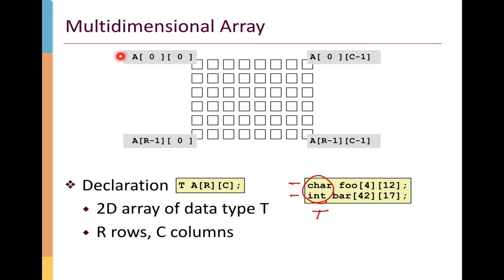Looking at the conceptual layout of the array, the first element is at row 0, column 0. The cell size varies based on the fundamental data type — for an integer, that's four bytes. The first row terminates at A[0][C-1], and the next row begins at A[1][0], proceeding to A[1][C-1]. The lower-left corner is A[R-1][0], and the final element is A[R-1][C-1].